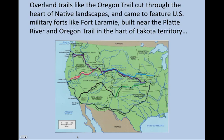You don't build sprawling military forts unless you plan on staying. Overland trails like the Oregon Trail cut through the heart of native landscapes and came to feature U.S. military forts like Fort Laramie, built near the Platte River. Here's Fort Laramie on the map in the heart of Lakota territory, but there were many other such forts — Fort Bridger, Soda Springs, Fort Bonneville, Fort Boise — basically the militarizing of overland travel routes by the U.S. government in the northern prairies, central regions, and southern migratory routes as well.